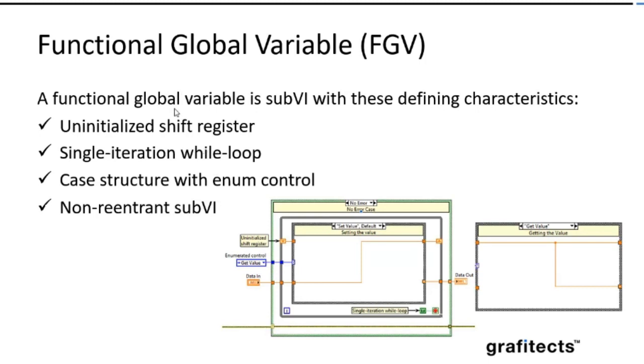That is our next topic here. So the FGV - a functional global variable is a subVI with these defined characteristics. The first one is uninitialized shift registers. Unless a shift register on a while loop causes LabVIEW to allocate storage for a single value that persists as long as the calling VI remains in the memory. The second point is a single iteration while loop. So here, if you see the image, I have connected the true constant to the while loop, so it's going to run only one time. So the while loop is only a mechanism to hold the shift register here. Case structure with the enum control - the case register selects the appropriate operation. Basically, we can read and write, and if you want, we can add more functionalities like increment or decrement or whatever function you want.